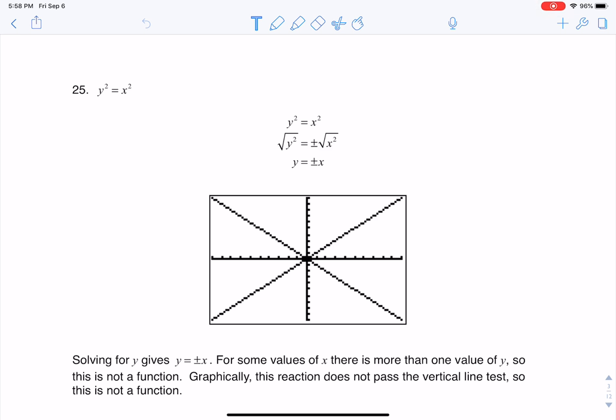So they started us with y squared equaling x squared, and you can see over here that I took the square root of both sides of that equation. So to move from here to here, this first line to the second line, I take the square root of both sides of the equation, and what we tend to forget when we're doing this is that the plus or minus symbol needs to show up.